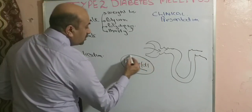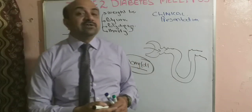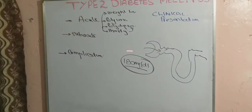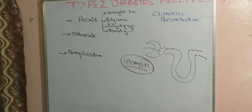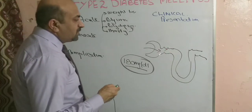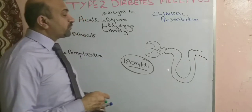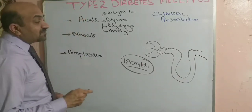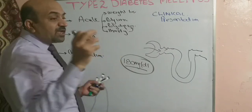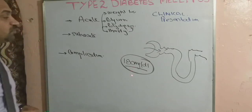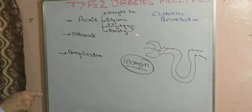Once blood glucose exceeds 180 milligrams per deciliter — the renal threshold, which can vary between around 173 to 273 milligrams per deciliter on average — there is glucosuria, meaning glucose passes out in the urine. The glucose in the urine drags fluid along with it by osmosis, causing polyuria. This fluid loss then triggers polydipsia — the constant thirst and demand for more water.